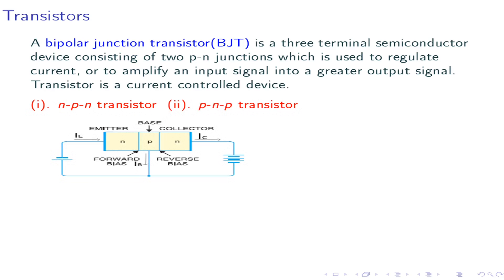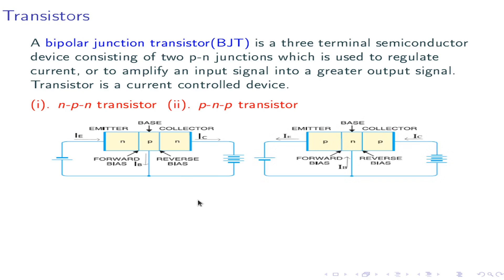This is the block diagram of an NPN transistor, showing the emitter, base, and collector. The emitter-base junction is forward biased and the collector-base junction is reverse biased. You can also see the direction of emitter, base, and collector currents. This is the PNP transistor, also showing its emitter, base, and collector with the respective current directions.